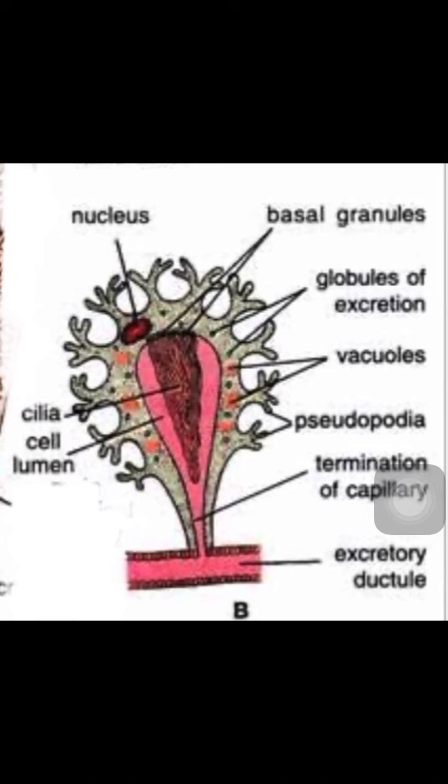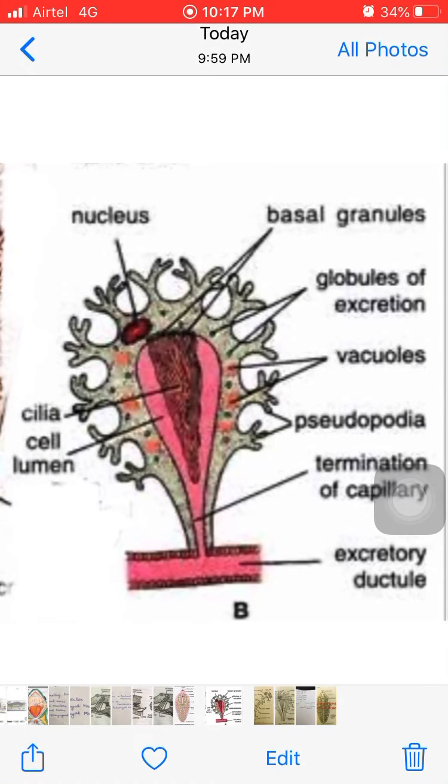The proto-nephridium flame cells are modified mesenchymal cells. Flame cells give off from their surface a number of branched cytoplasmic processes.